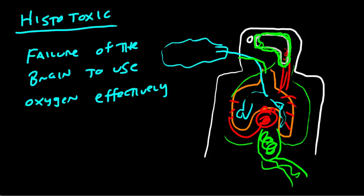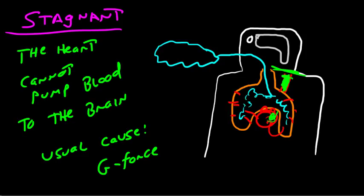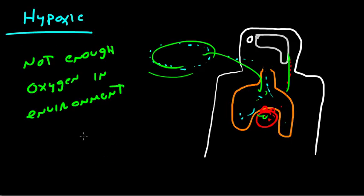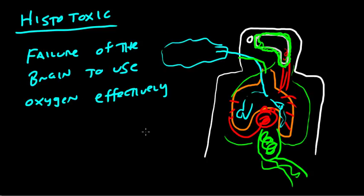So we've got four different types of hypoxia: stagnant hypoxia — oxygen reaches the lungs and heart but the heart cannot pump it up to the brain; hypoxic hypoxia — simply not enough oxygen outside, so none can reach the brain; hypemic hypoxia — a failure of the blood to absorb the oxygen necessary to be moved to the brain; and finally histotoxic hypoxia — a failure of the brain to use oxygen effectively. Those are the four major types of hypoxia.